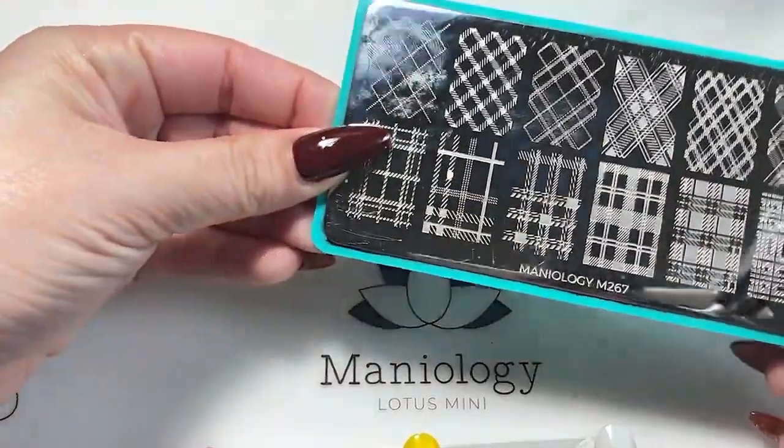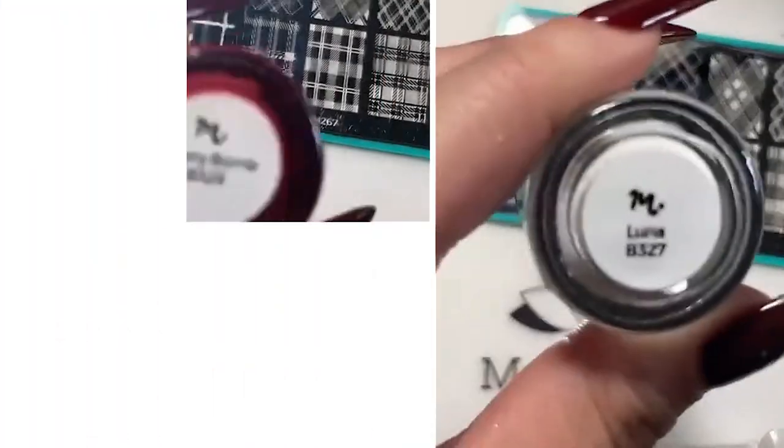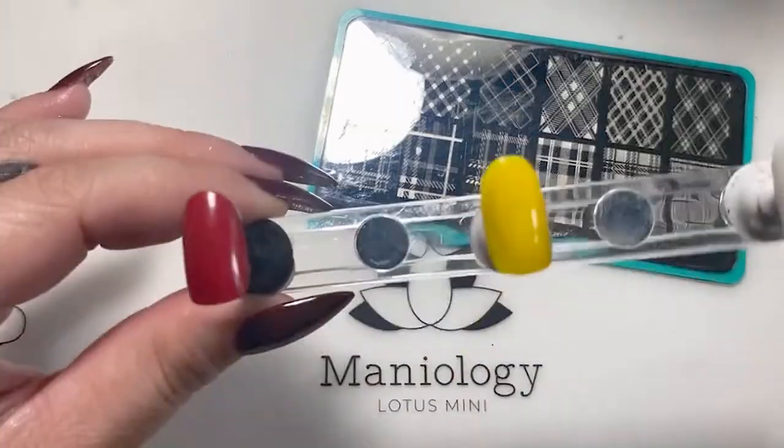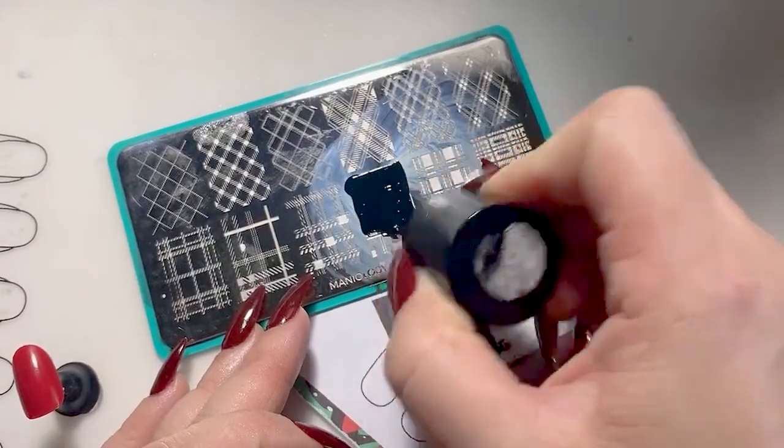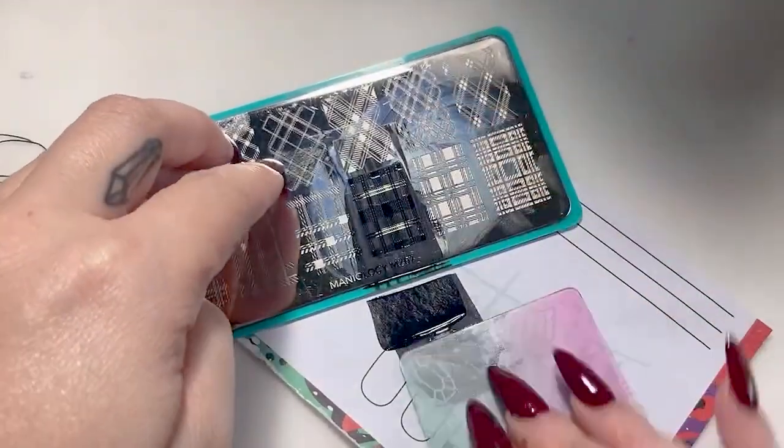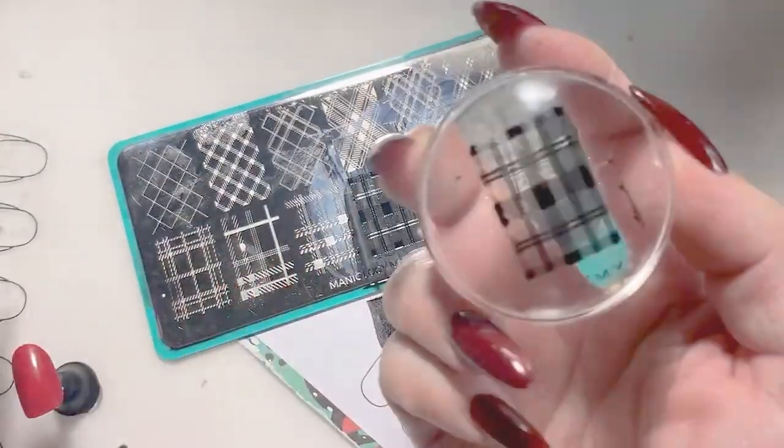Today we are going to be showing you how to create easy plaid designs using plate M267. We all know plaid can be very difficult. That's why we create stamping plates to make our lives easier.